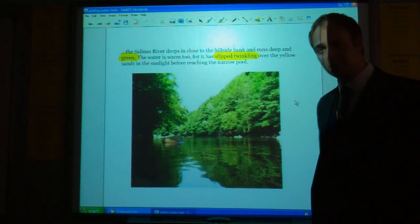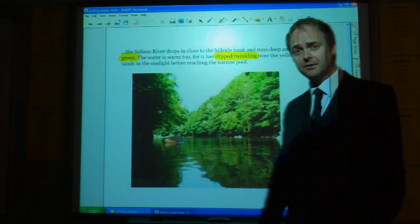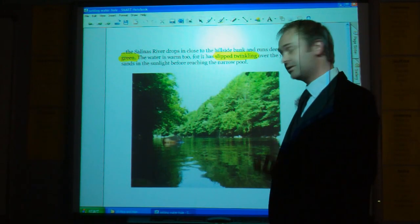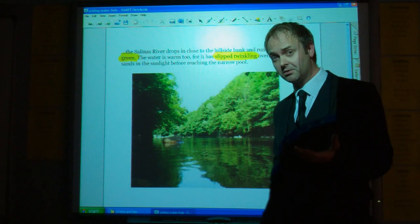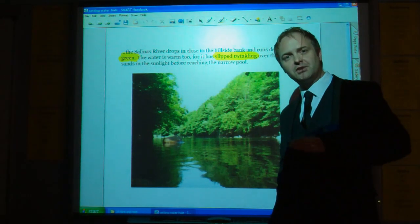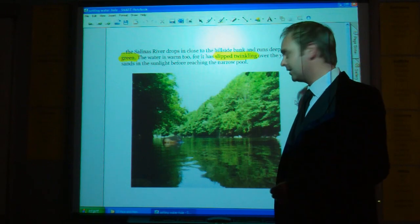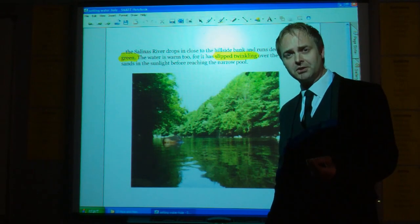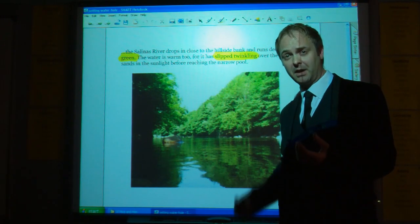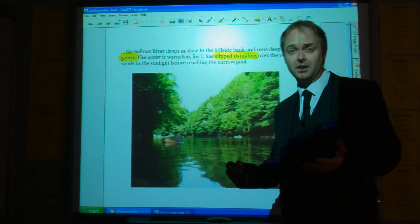Colour is really important for Steinbeck, and first of all, the colour green here might suggest verdancy, new life. It's a very positive term to use in terms of the description of the river. Slipped suggests an ease of movement, and twinkling has very positive connotations. It's almost childlike, and it's often associated with things that we have positive connotations for, like stars.